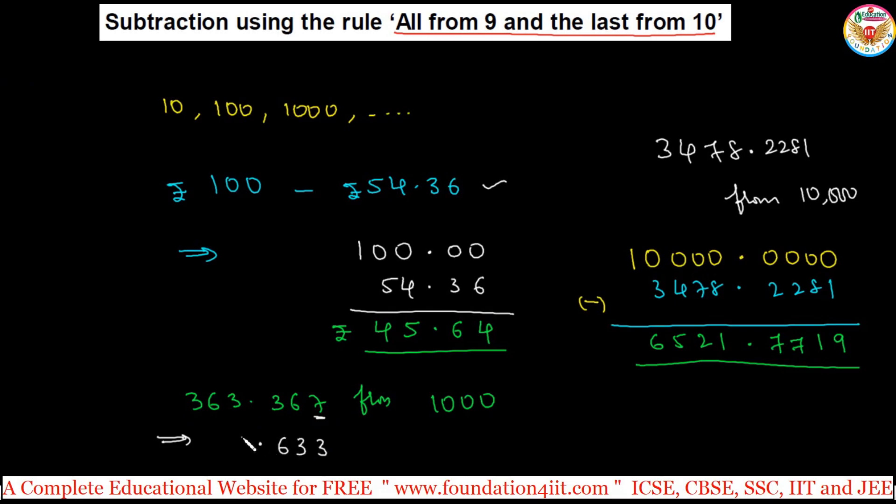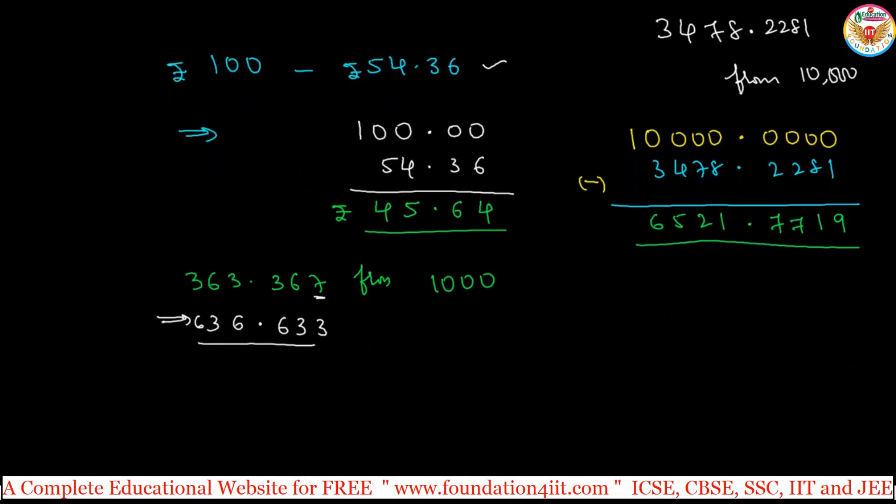So this is 6, 3, point 6, 3, 3. Simple. So 636.633. Same method you can apply for any bigger number.